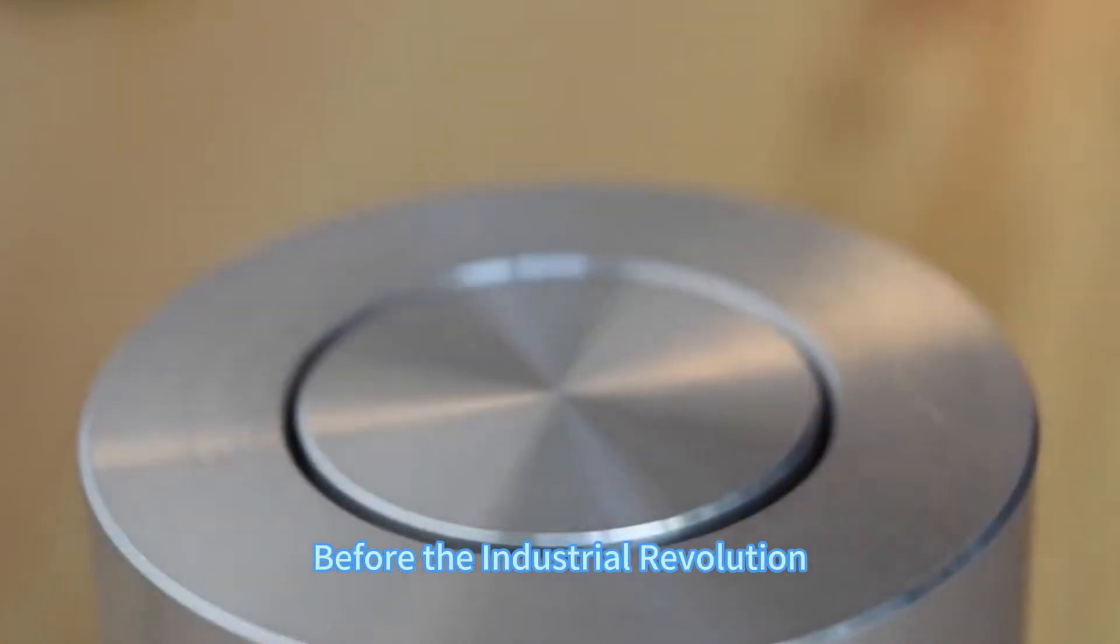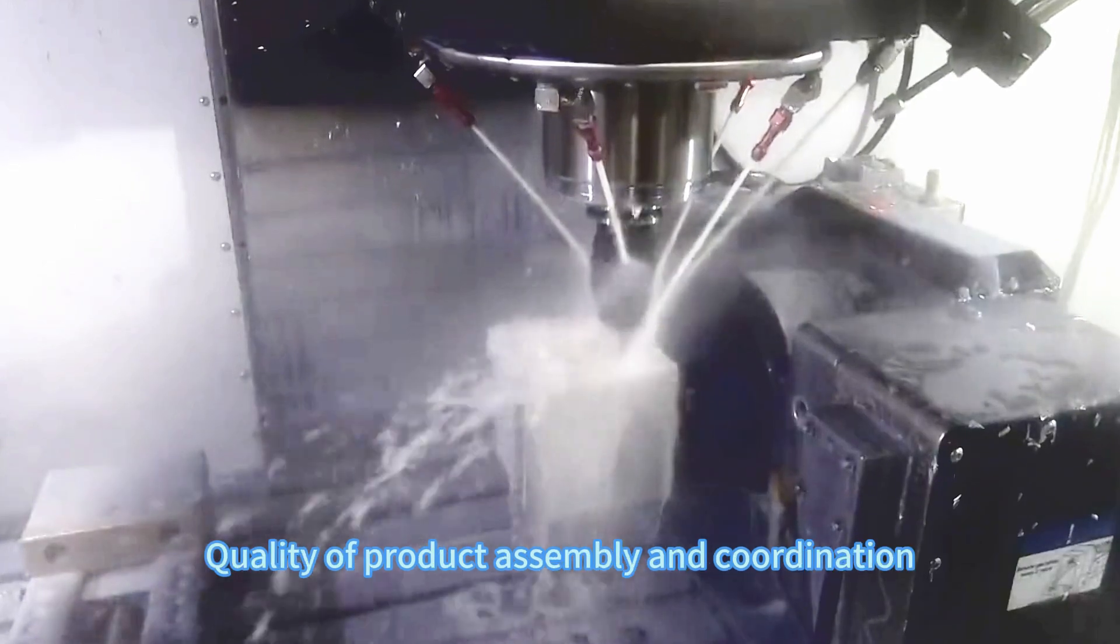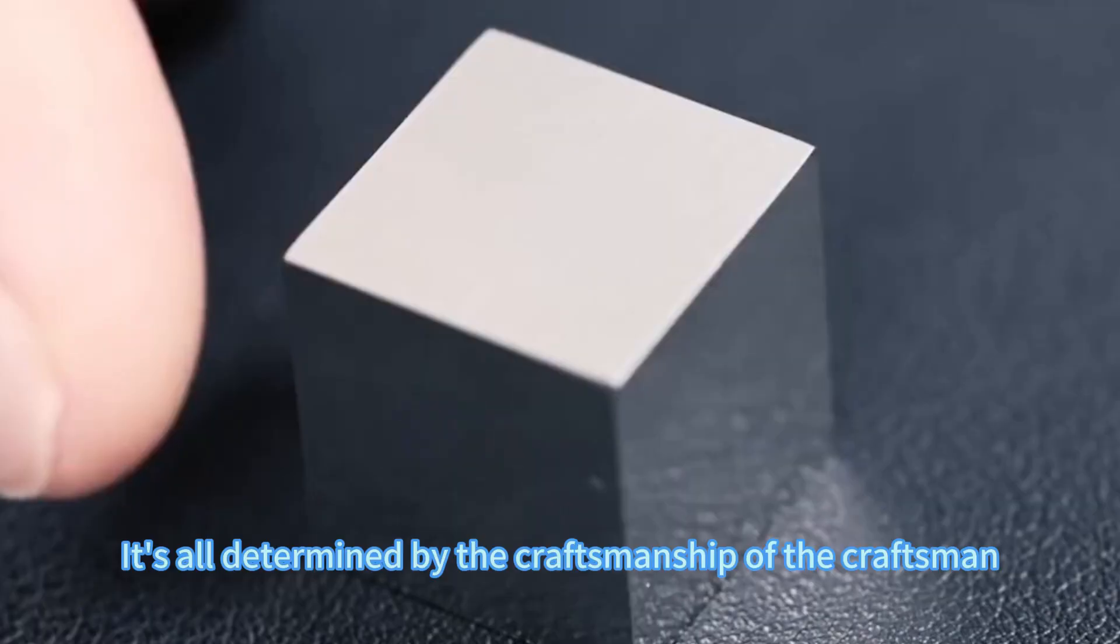Before the industrial revolution, quality of product assembly and coordination was all determined by the craftsmanship of the craftsman.